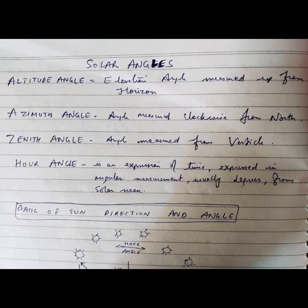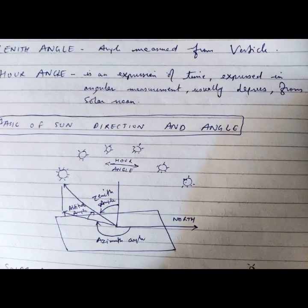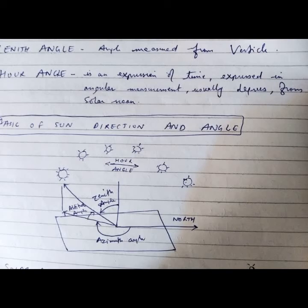This diagram shows the zenith angle, altitude angle, azimuth angle, and solar hour angle. Basic solar direction and angles are illustrated in this diagram — these are all solar angles.